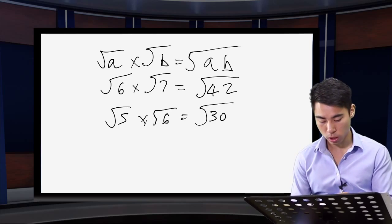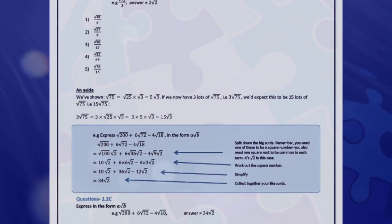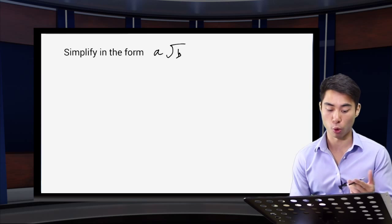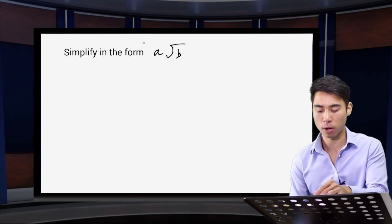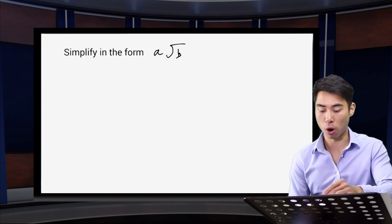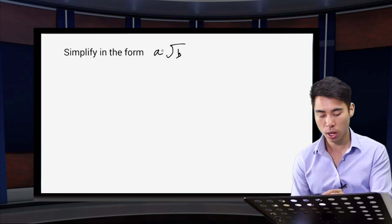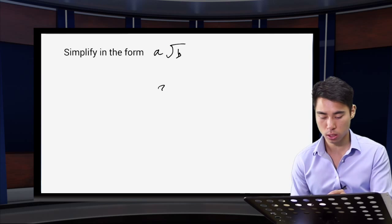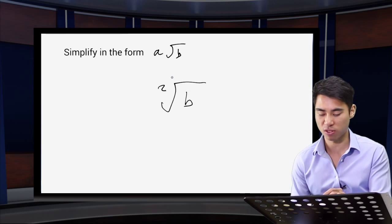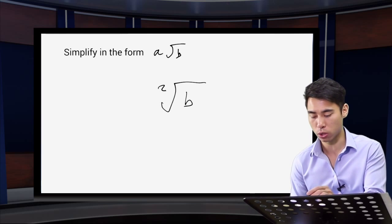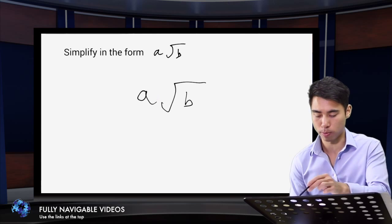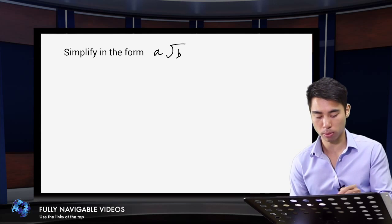What type of question might you be asked in your final exam? It might involve surds, and the question might ask you to leave your answer in simplified form or in the form a root b. A note about this: the 'a' here is not a small superscript — it's not a square root or cube root. It's a big 'a', meaning a lots of b, i.e. a multiplied by root b.